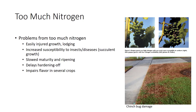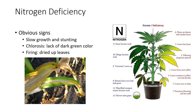For that reason, in cold climates, people are discouraged from applying nitrogen to perennial and woody plants in late summer. In all plants, slow growth and stunting are the most obvious signs of nitrogen shortage. Because nitrogen is part of chlorophyll, nitrogen-deficient plants lack the dark green color of well-fed plants. This symptom is called chlorosis.